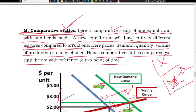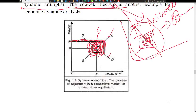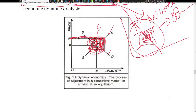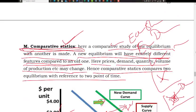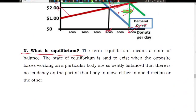So that is comparative statics — it compares two equilibria with reference to two points of time. These are three types of studies in economics: economic statics, economic dynamics, and comparative statics — all based on the time element. You should explain these three concepts with the help of a diagram.